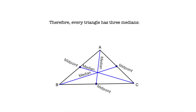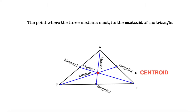Every triangle has three medians. From each segment, we are going to trace the midpoint — right in the middle of that segment — and match it exactly with the opposite vertex. The point where the three medians meet is called the centroid of the triangle, and that is what we are going to learn how to find in this video.